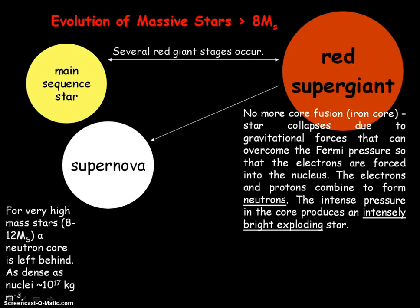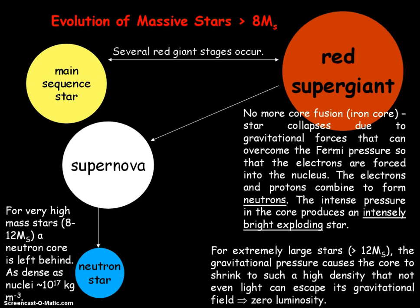Stars with an original mass between 8 and 12 solar masses will, after supernova, leave behind a core of neutrons, giving a neutron star — which is as dense as nuclear matter. For stars with an original mass above 12 solar masses, further gravitational collapse causes the core to reach such a high density that not even light can escape its gravitational field, and we're left with a black hole.